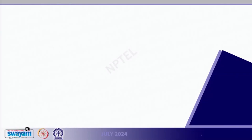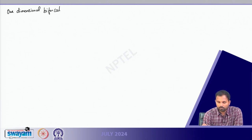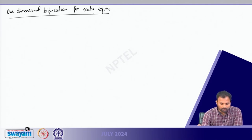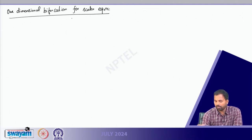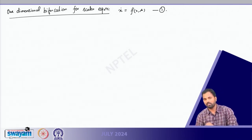So what do we mean by one-dimensional bifurcation for scalar equations? We remember the equation was x-dot equals f of x comma μ — let us call this equation number 1. This is our reference equation that we will refer to most of the time.